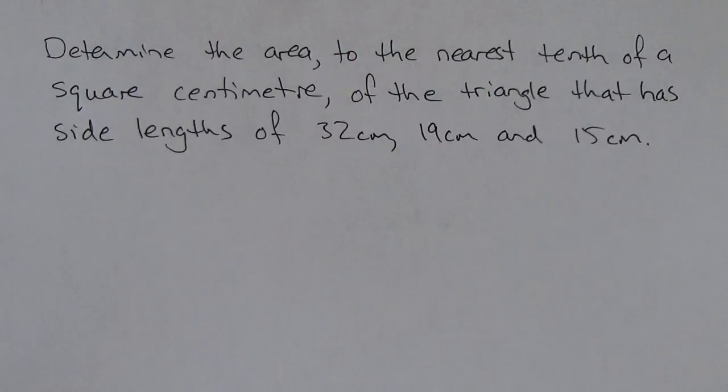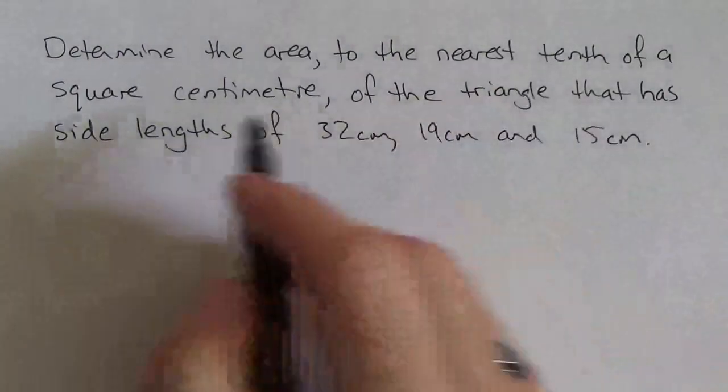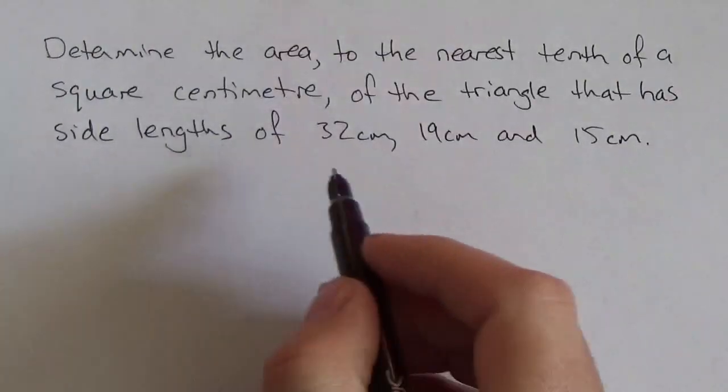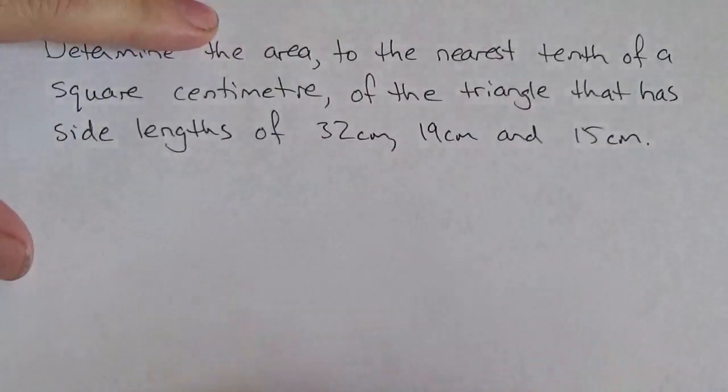Okay, so the question we want to look at here is: determine the area to the nearest tenth of a square centimeter of the triangle that has side lengths of 32, 19, and 15.